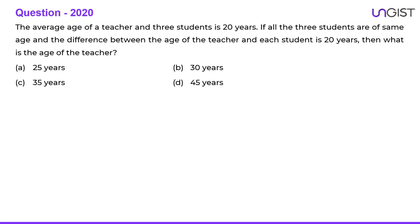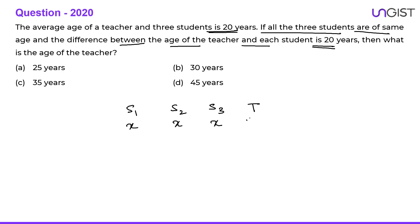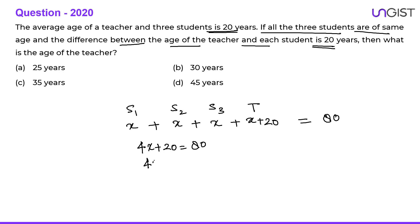Next question: the average age of a teacher and three students is 20 years. All three students are of the same age and the difference between the age of the teacher and each student is 20 years. Let the age of each student be x, so students are x, x, x and teacher is x plus 20. Average of all four is 20, so 20 into 4 equals 80. Therefore 4x plus 20 equals 80, giving 4x equals 60, so x equals 15 years.